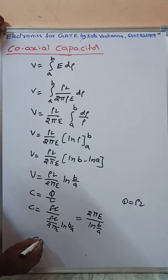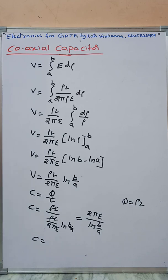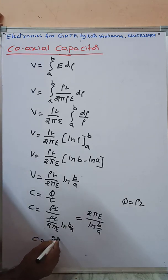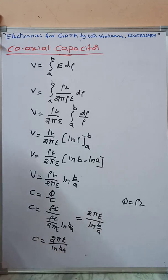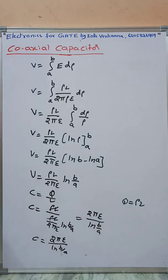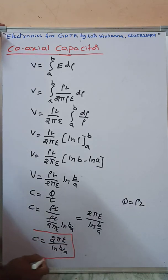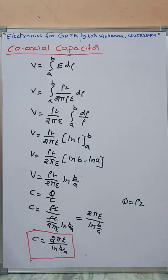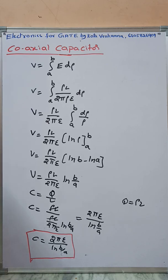Therefore, the coaxial capacitor capacitance is C = 2*pi*epsilon / log(b/a). This is the coaxial capacitor equation. If we apply the value of epsilon = 1/(36*pi * 10^9), the C value can be further simplified.